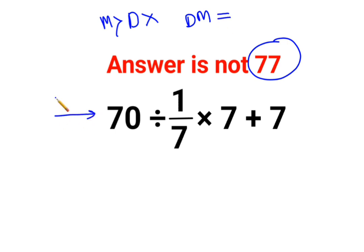So in sums like these, you just have to go from left to right. Whatever operation happens first on your left-hand side has to be done first. So 70 divided by 1/7 is the first operation you need to perform.